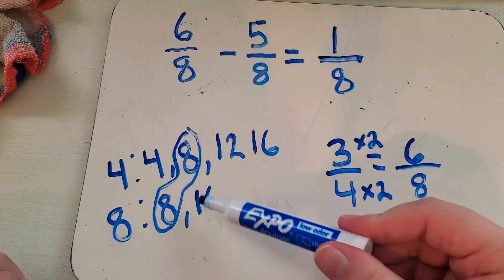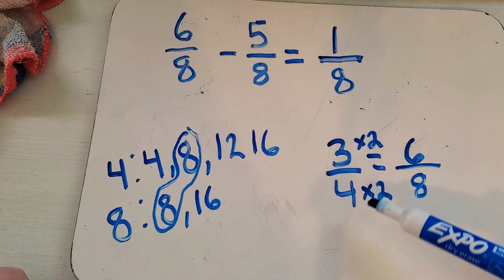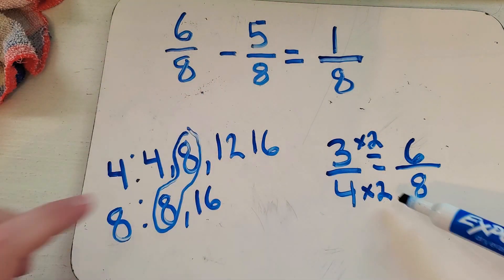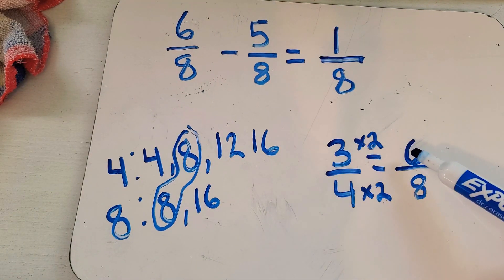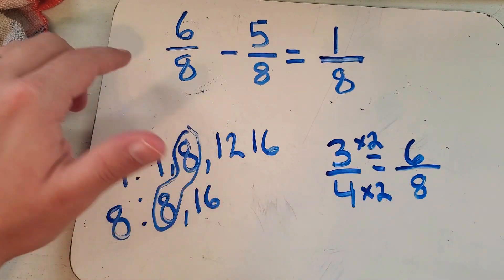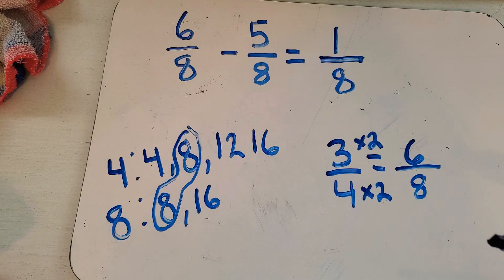All you do is get these bottom ones matching, and you do that by finding a common multiple. All you gotta do is know your multiplication facts. And whatever you do to the bottom - see I did four times two equals eight to get a matching eight - I got to do the top. So three times two equals six. That's how three fourths became six eighths.